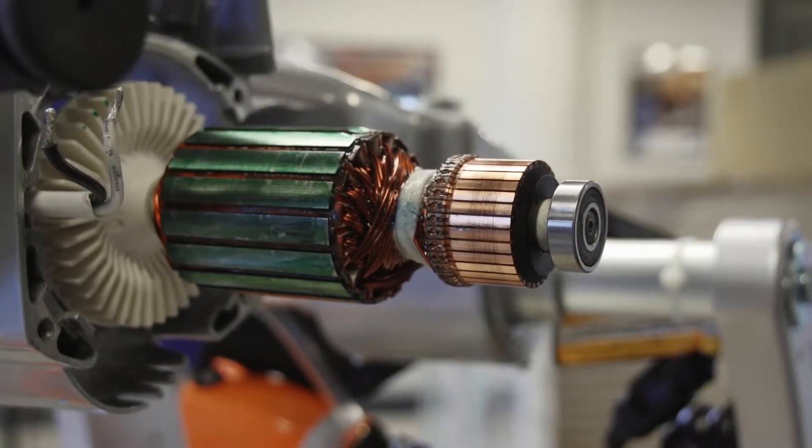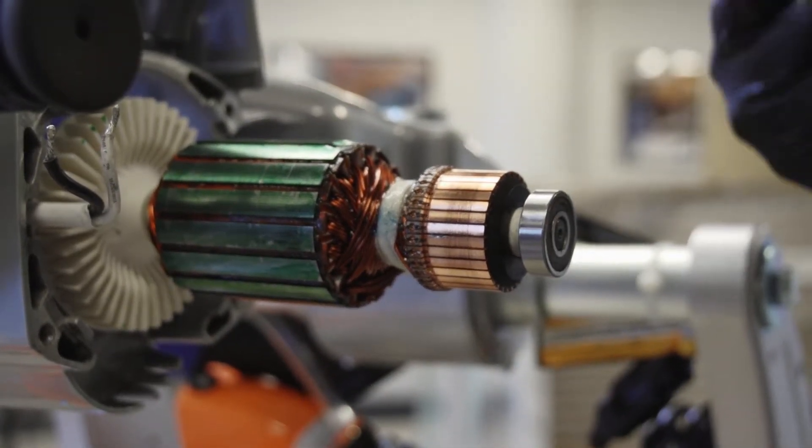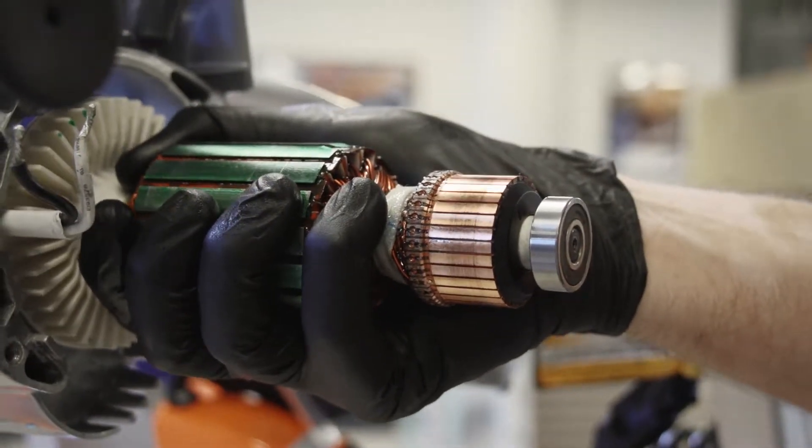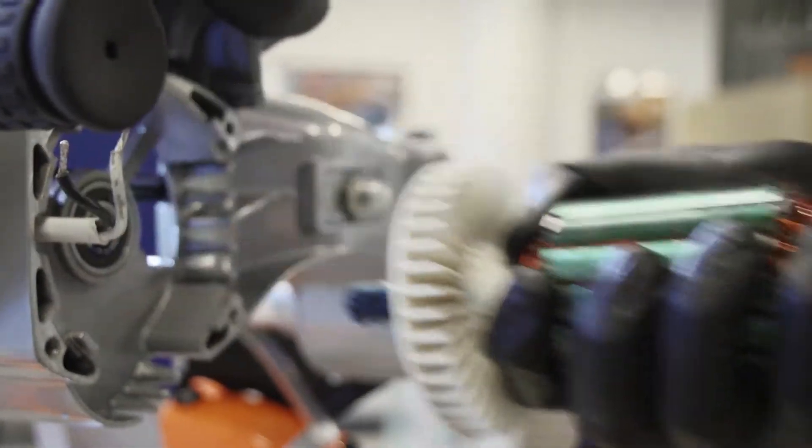When the armature shaft is almost pushed through the bearing, come over to the other side, grasp the armature, and pull out of the bearing.